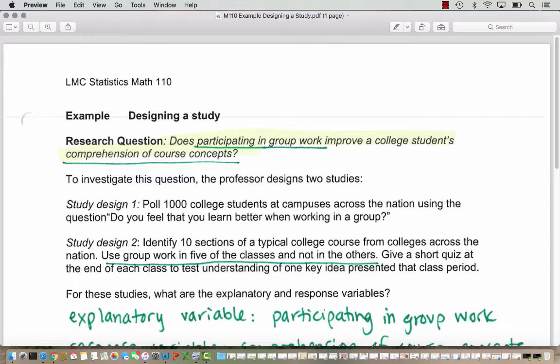In study design two, we identify ten sections of a typical college course from colleges across the nation. Use group work in five of the classes and not in the others. Give a short quiz at the end of each class to test understanding of one key idea presented that class period.